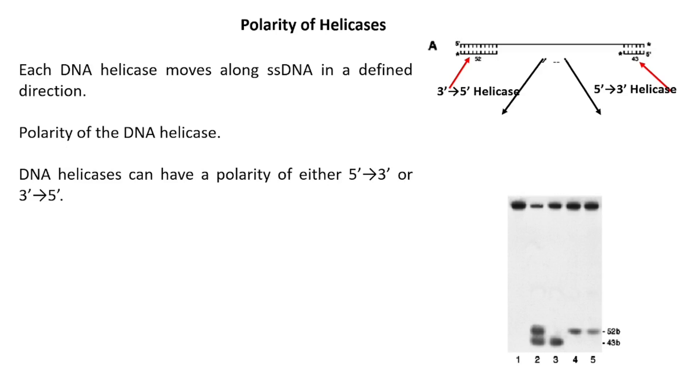If the helicase has 3' to 5' polarity, then the oligonucleotide of 52 base pair is released, which can be observed after electrophoresis as can be seen in lane 4. However, if the helicase has 5' to 3' polarity, then the product released would have the 43 base pair oligonucleotide as can be seen in lane 3.